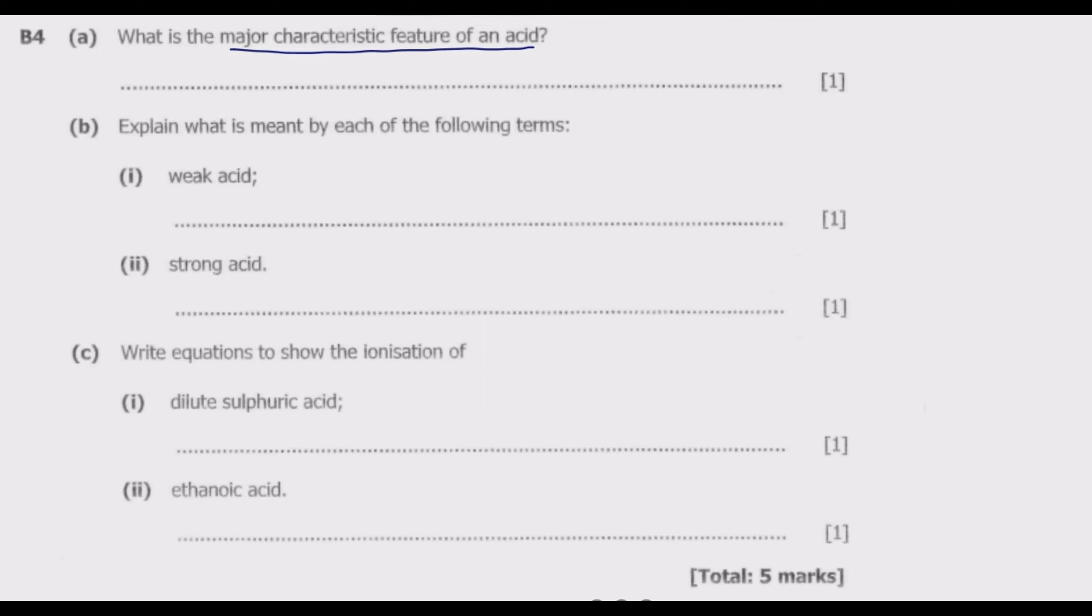They have a pH value lower than 7 because of the ionization. Remember, if the pH value, which is the potential hydrogen, is greater than 7, we are talking about a base.